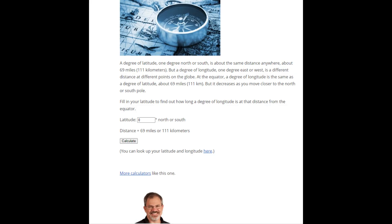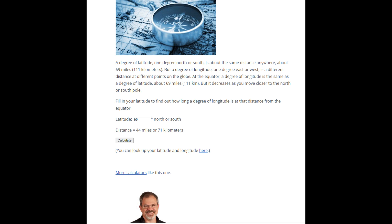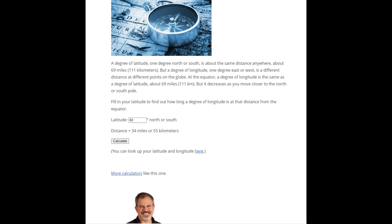At the equator, the distance between the two longitude lines is 111 kilometres per degree. At the 50th latitude line, that drops to 71 kilometres, and at the 60th latitude line, that drops to 55 kilometres. That's half the distance compared to the equator.